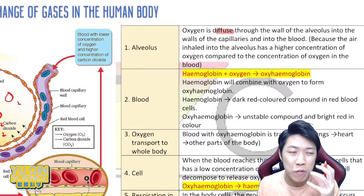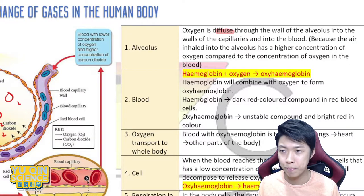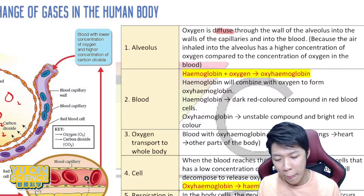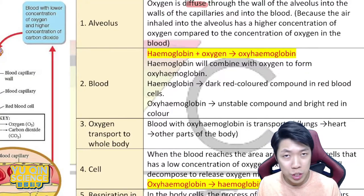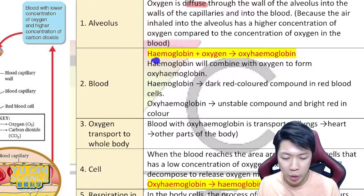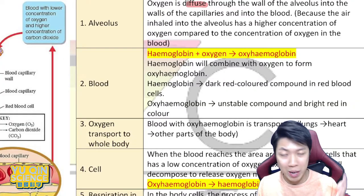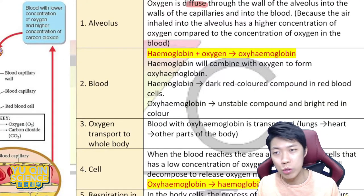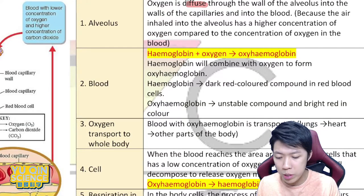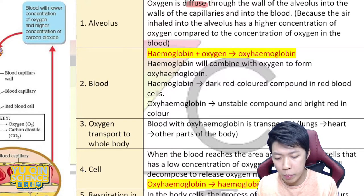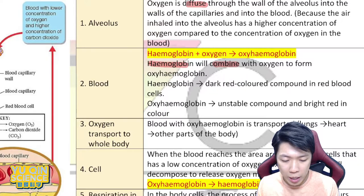Step two: when oxygen diffuses into your blood capillaries, it will combine with hemoglobin. The equation is: hemoglobin plus oxygen equals oxy-hemoglobin. The most important thing for step two is oxy-hemoglobin — hemoglobin combines with oxygen to form oxy-hemoglobin.